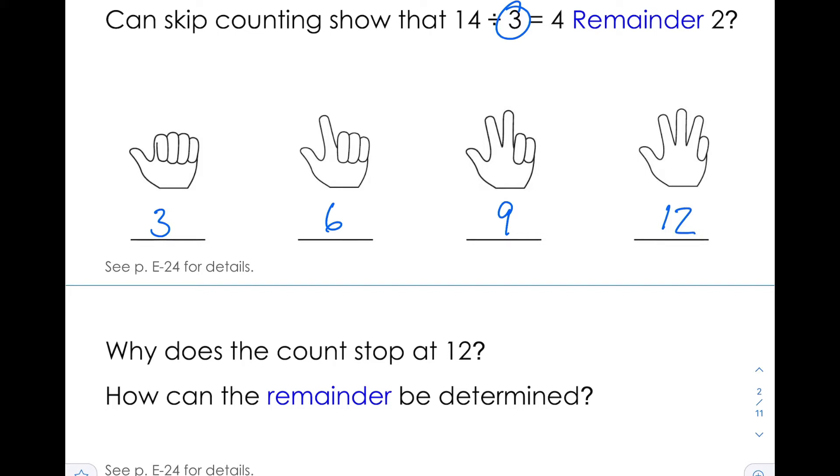When I skip count by 3 four times, I get to 12. Now, to get to 14, I need to add 2 more. That'll get me to 14. Why does the count stop at 12? Because if we skip counted one more time, we'd get to 15, and we'd be past our 14 mark, which we can't do. How can the remainder be determined? The remainder is how many more do you have to add in order to get to our magic number of 14.